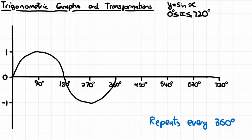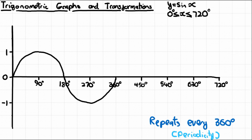The graph repeats itself every 360 degrees — this is called periodicity. This makes it easy to extend: you only need to remember 0 to 360 degrees because after that it's just a copy and paste. So it goes up to 1, then down to 0, then down to -1, and back up to 0 at 720 degrees.